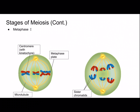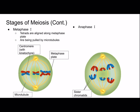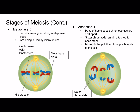Next we have metaphase I, where the tetrads are aligned along the metaphase plate, being pulled by microtubules — chromosomes are pulled by microtubules attached to the kinetochores on the centromere. The metaphase plate is not an actual visible structure; it's an imaginary plane toward the center of the cell. Anaphase I is where the pairs of homologous chromosomes are split apart — sister chromatids remain attached to one another, but microtubules pull the homologous chromosomes to opposite ends of the cell.